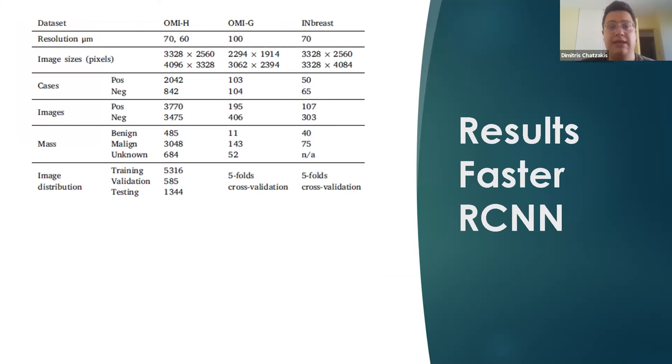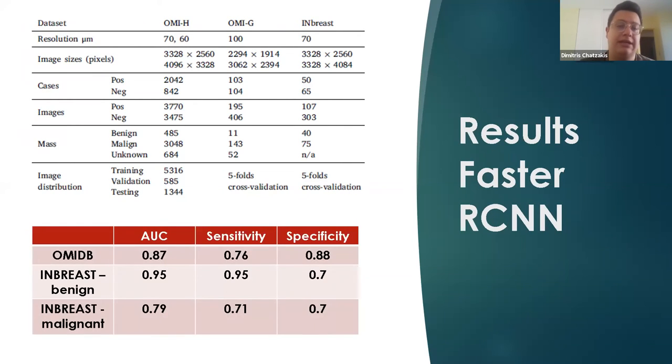Here, we have two datasets, the OME-DB and the INbreast, where the OME-DB is split into OME-H and OME-G. The OME-H part of the dataset was used in every case to first train the network, while in the cases of the OME-DB, the OME-G was used for fine-tuning and then the INbreast was used separately for its malignant case and for its benign case again for fine-tuning. So the results here is area under curve of 0.8587 for the OME-DB with sensitivity of 0.76 and a specificity of 0.88, while the INbreast benign case has an AUC of 0.95, sensitivity of 0.95 again, a specificity of 0.7, while we have lower and worse results for the malignant case.